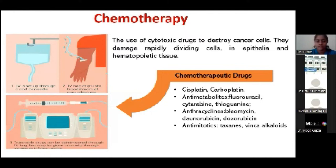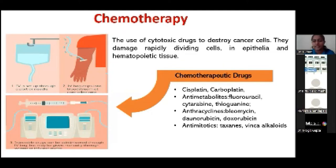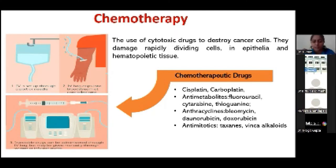A quick review of chemotherapy: cytotoxic drugs are administered intravenously through a controlled device regulating the volume entering the bloodstream. Common drugs include cisplatin, carboplatin, anti-metabolites like fluorouracil, bleomycin, anthracyclines, and anti-mycotics. When the chemotherapeutic agent enters the bloodstream, it cannot identify only cancer cells — it kills rapidly dividing cells, including normal epithelial cells undergoing regular turnover. This is where patient complications begin: the killing of not just cancer cells but all rapidly dividing cells.